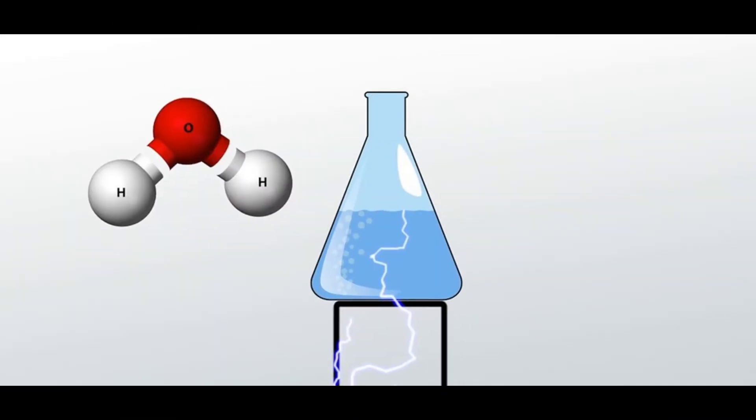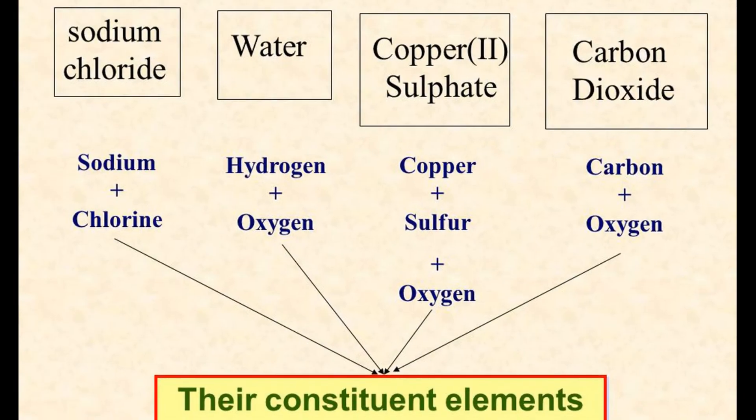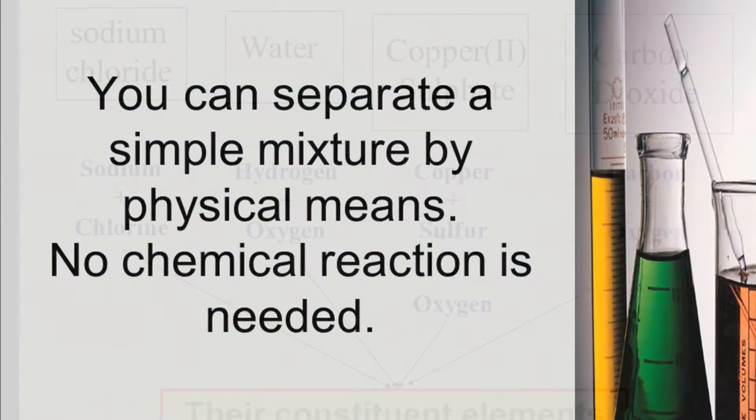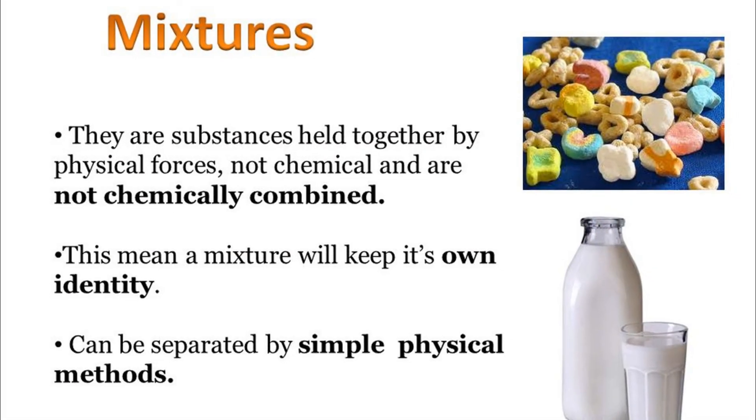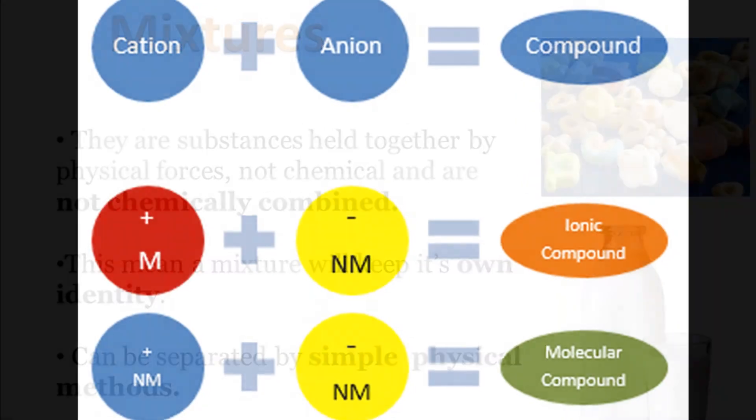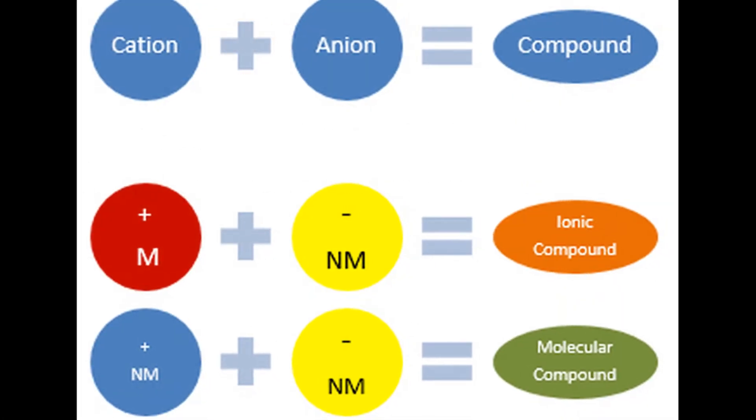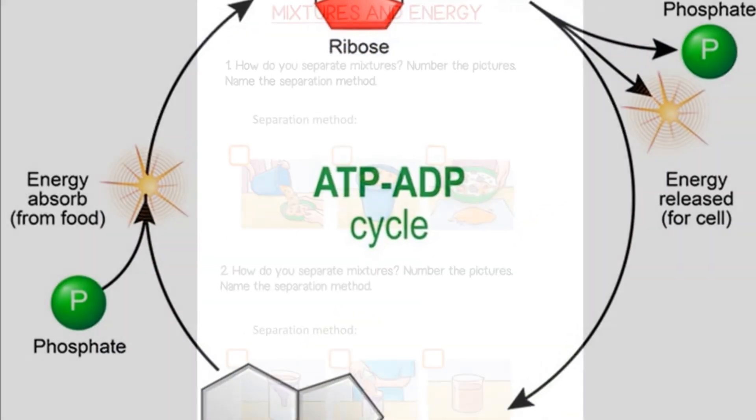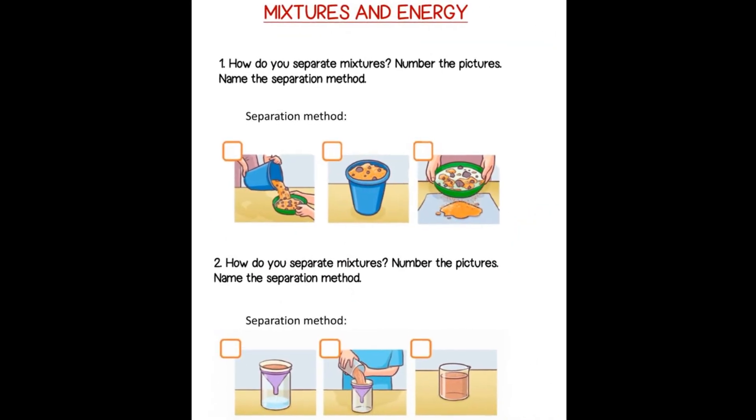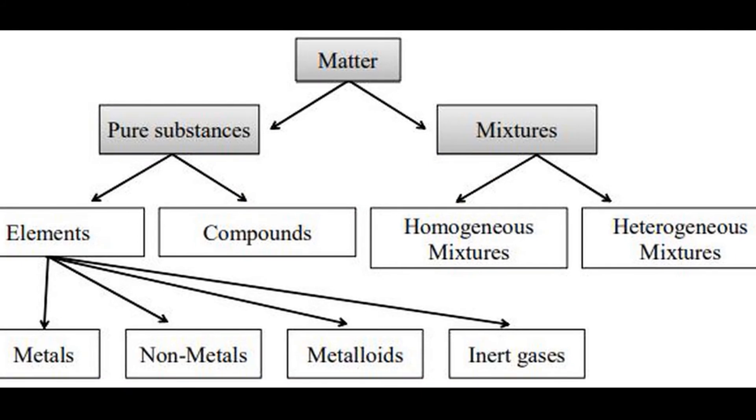A compound cannot be broken up into its constituent elements by simple physical methods, while the various components of mixtures can be separated by simple physical means. A compound is formed by absorption or the evolution of energy, while the formation of mixtures does not usually involve absorption or evolution of energy.